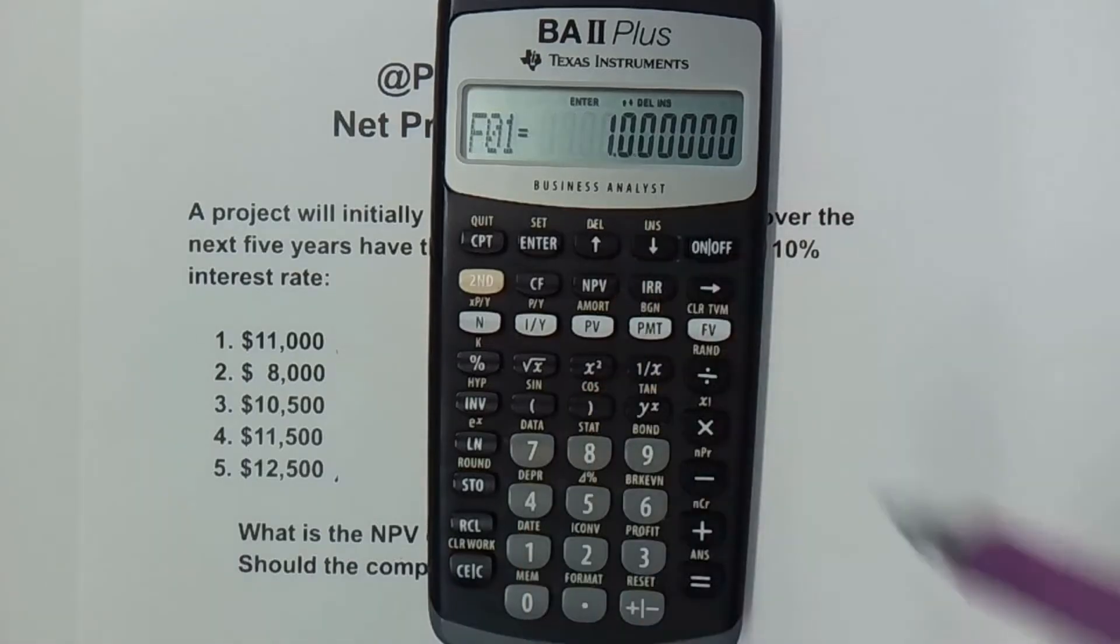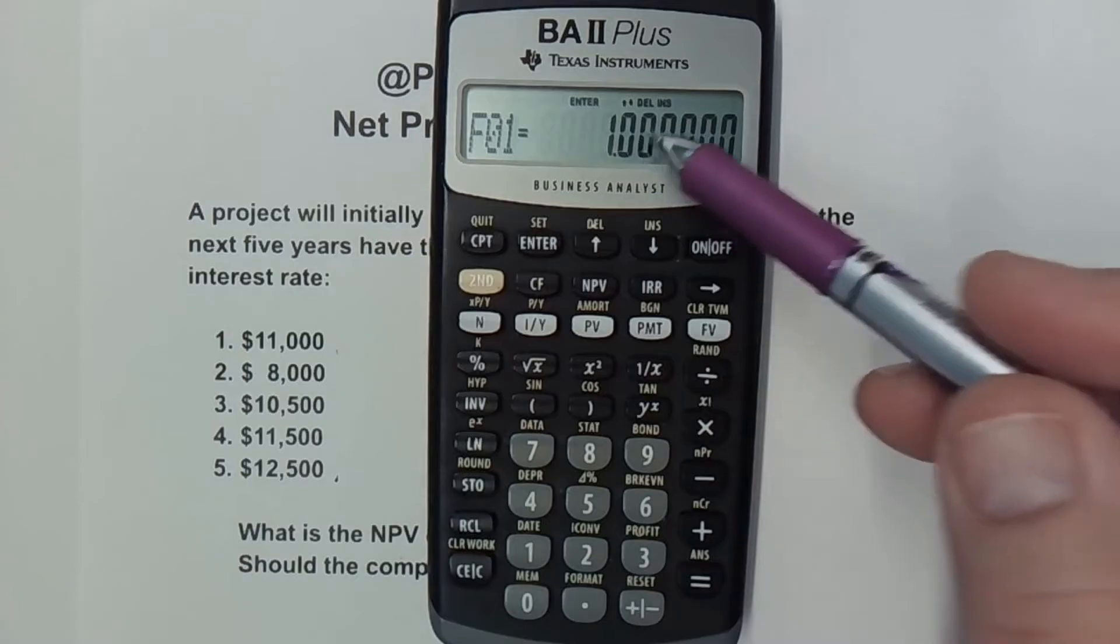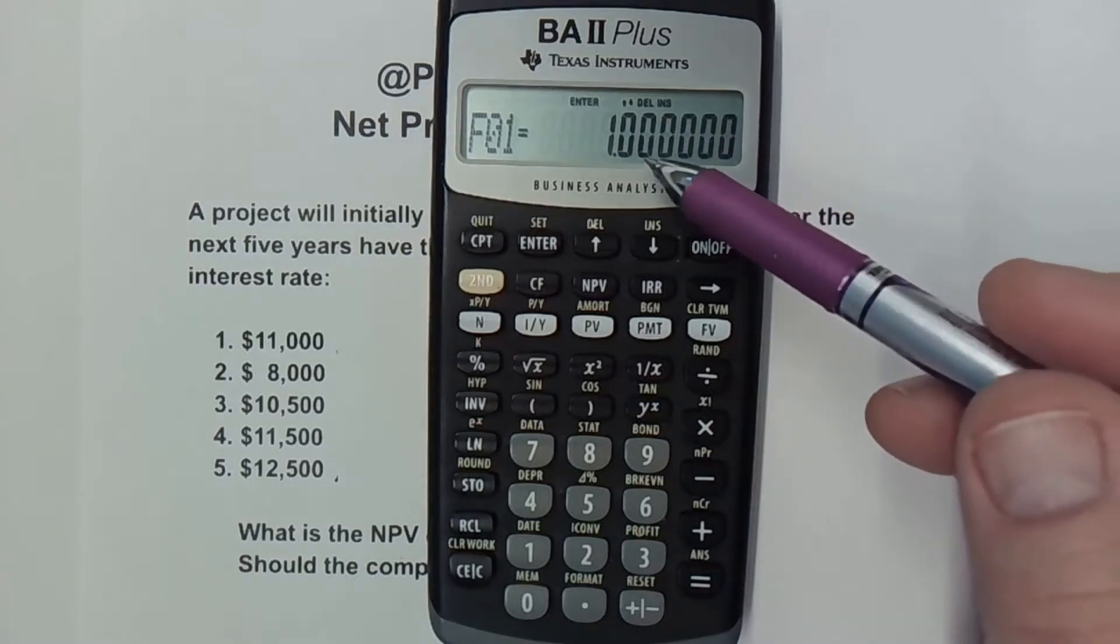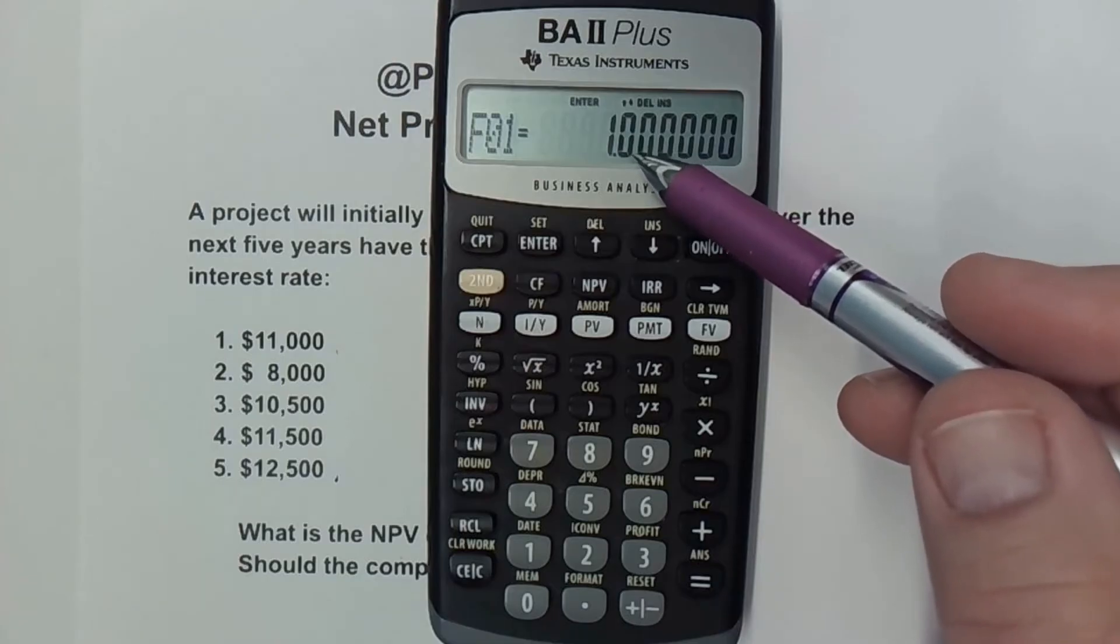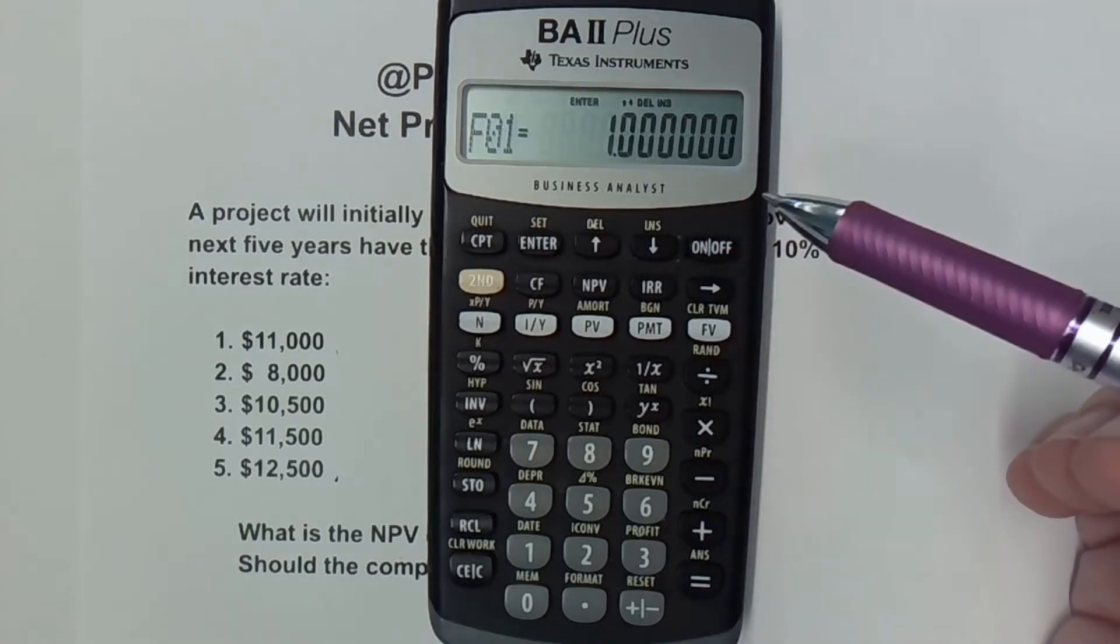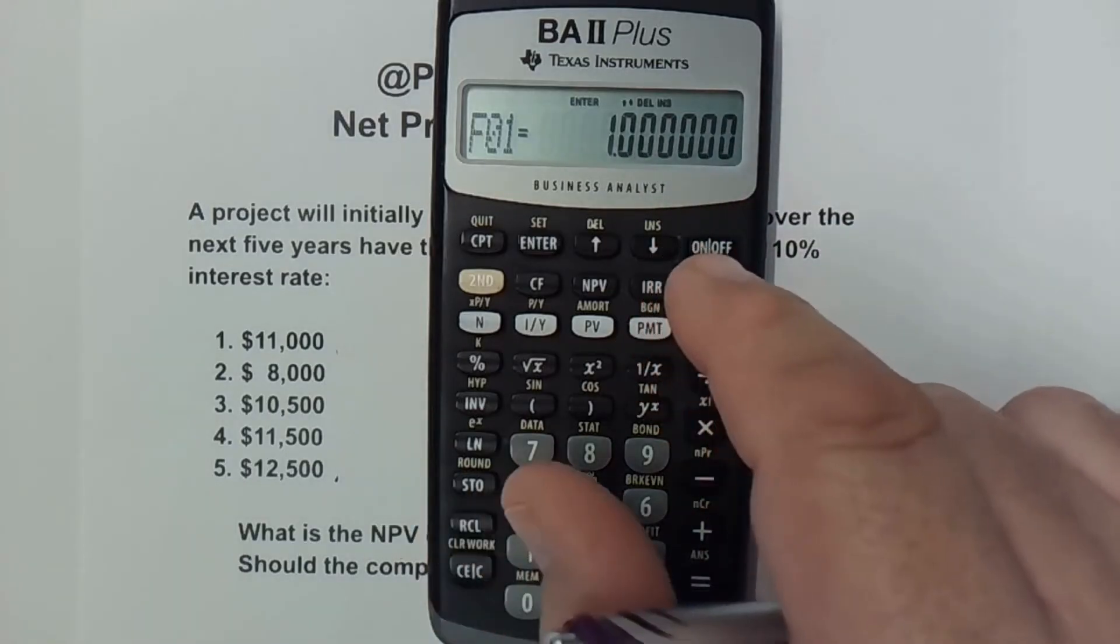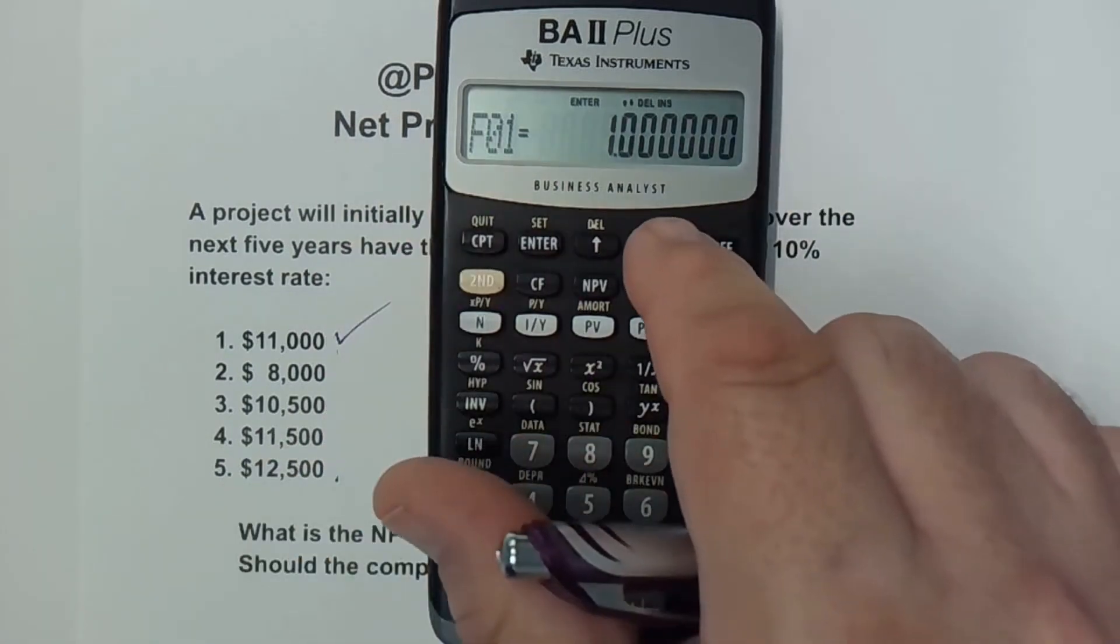I arrow down and this is F01, the frequency of that first cash flow. It only happens once. So I'm going to leave it. If you had multiple cash flows all the same amount, you could change this number and that would just show you the multiples of it. But in this case, we're going to leave it as one, ready to move on to the second year. We did the first one, moving on to the second one.